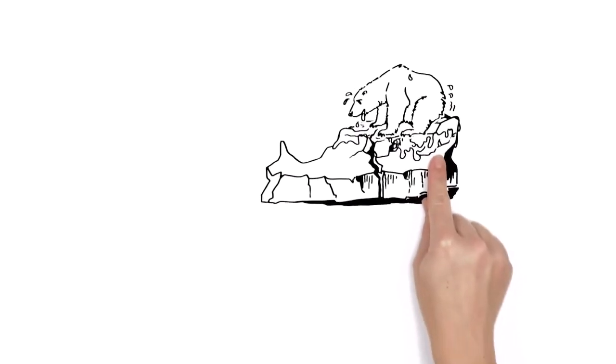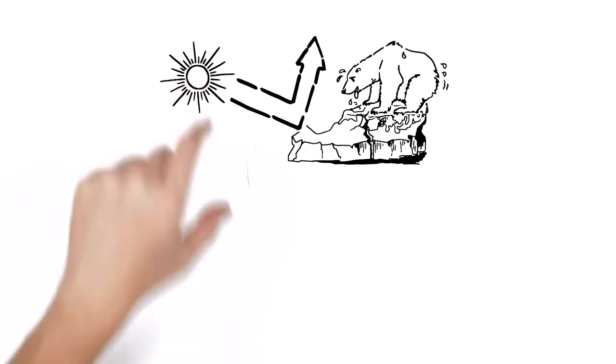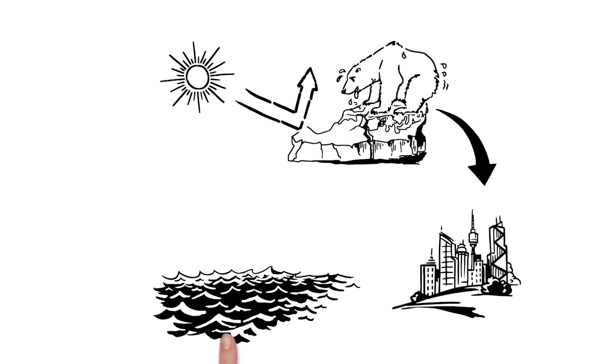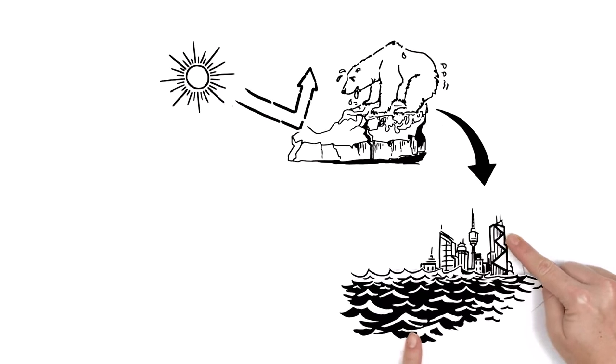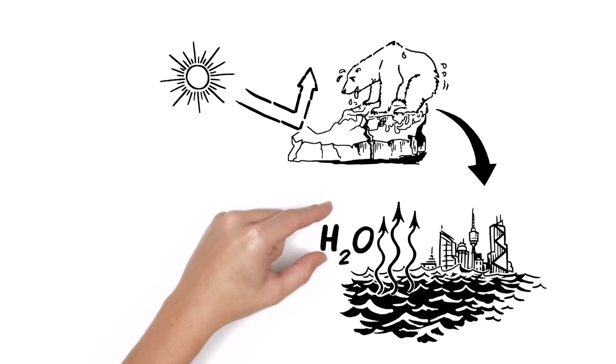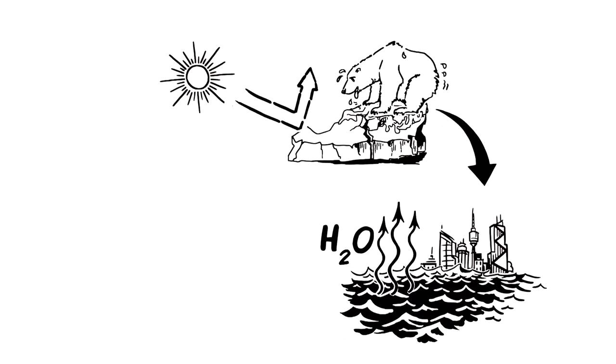When polar ice and glaciers melt, they reflect less sunlight and the sea level rises. Millions of coastal inhabitants are in danger. Additionally, water evaporates, which increases the greenhouse effect.